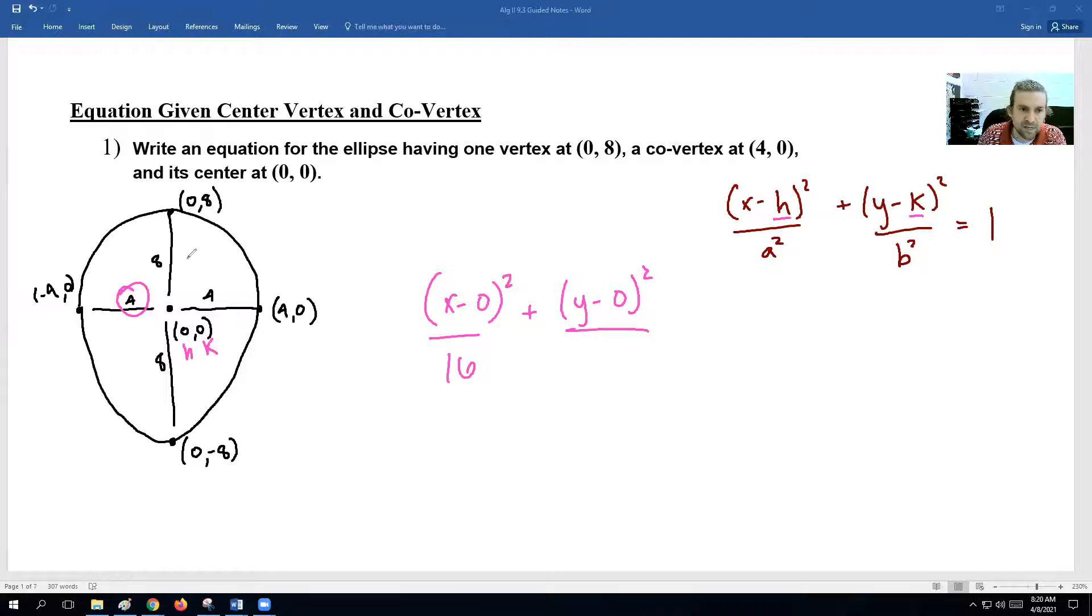And then the one that goes up and down, 8, or actually the whole length is 16, but semi is 8, we'll square that, is 64 equals 1. So the only thing we can do here is just clean this up. If we have x minus 0 squared, that's just x squared over 16, plus, and then we can say this is y squared over 64 equals 1.